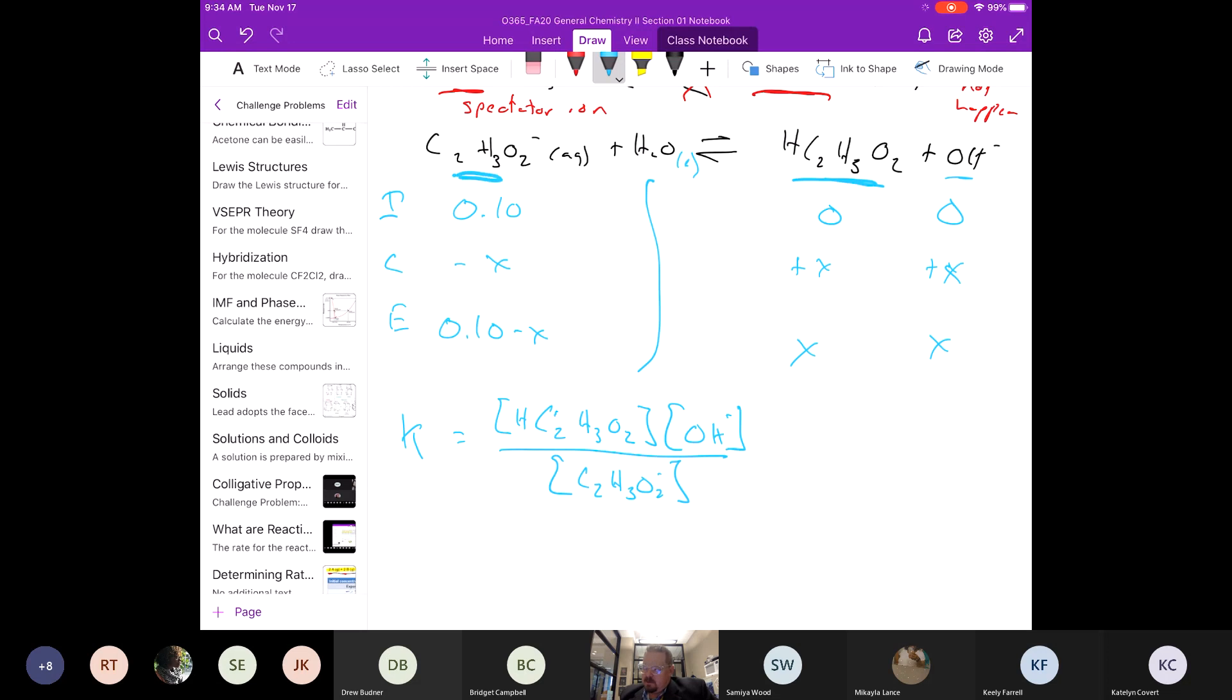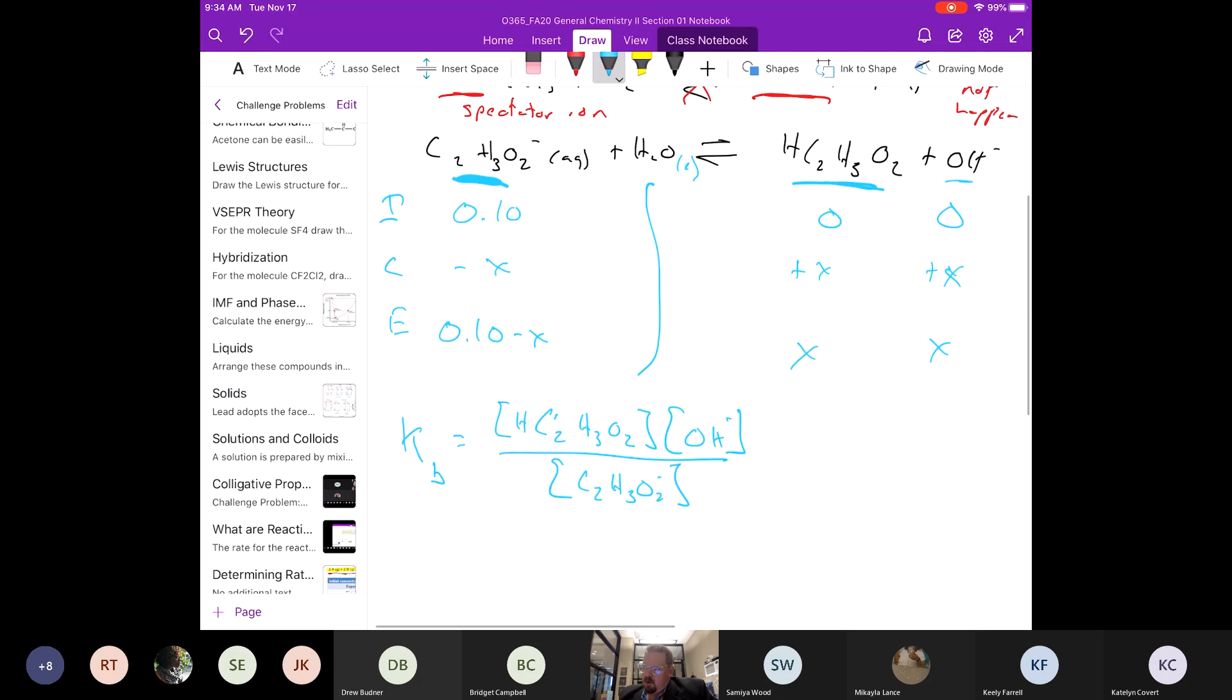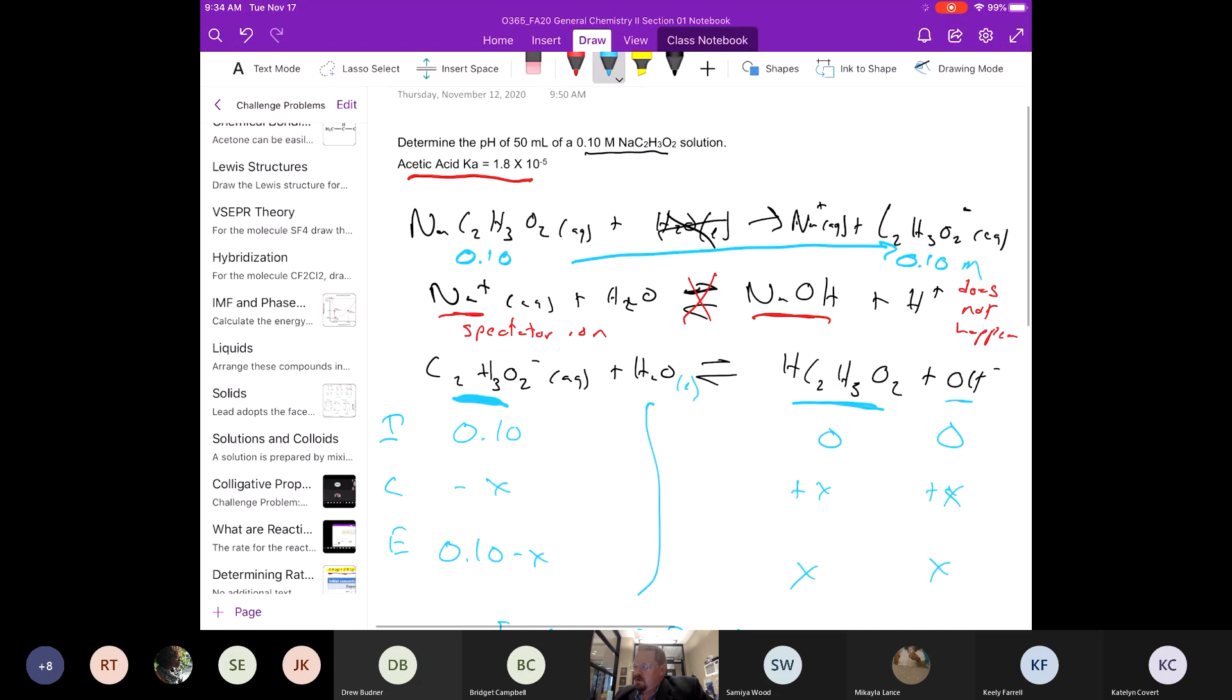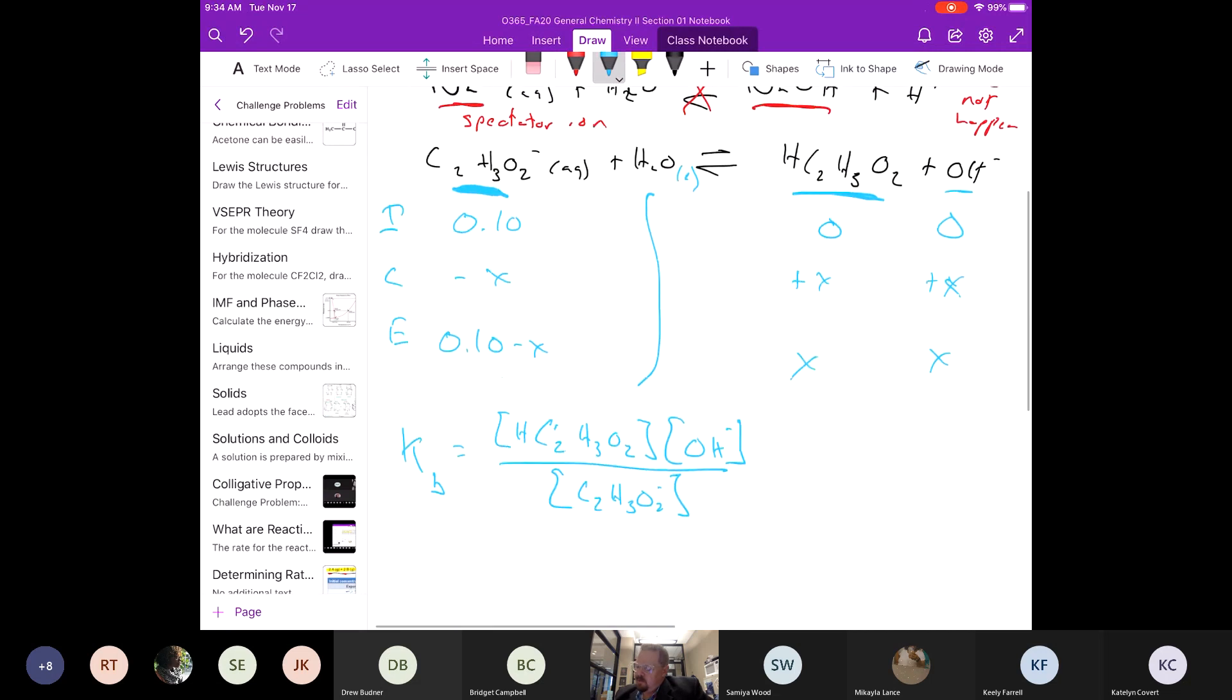But this is a base, so this we would call KB. We were given the Ka for the acid. So we have to go back to our Kw.